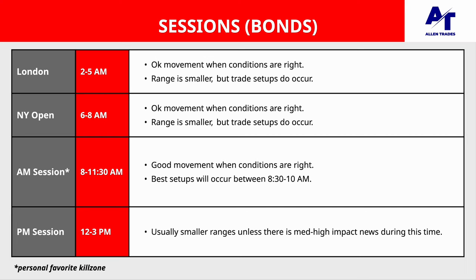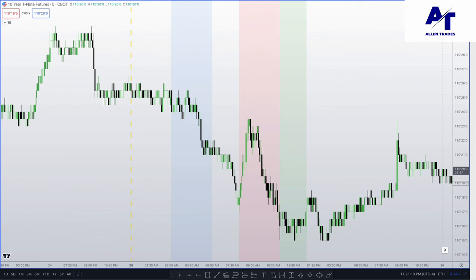There's good movement in the AM session when the conditions are right, and the sweet spot is from 8:30 AM to 10 AM for bonds. Moving on to the PM session, from 12 to 3 PM, there are usually smaller ranges unless there's some type of high or medium impact news during this time. When the bond auction news report comes out — usually at 1 PM — you want to ignore the previous three sessions, don't try to trade them, and wait for the PM session because that is when the best setup is going to occur. The same applies for FOMC, which usually comes out at 2 PM.